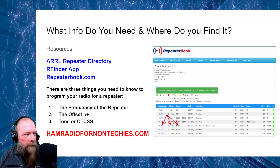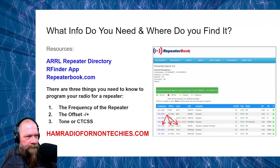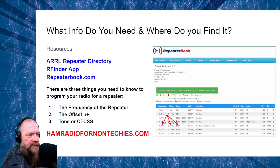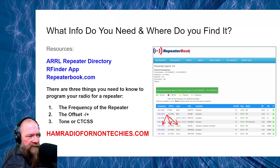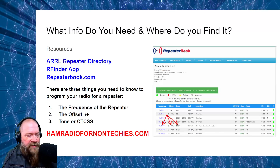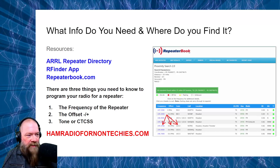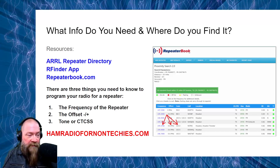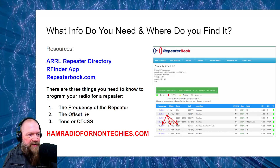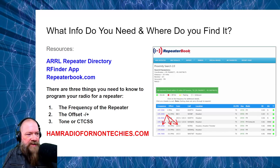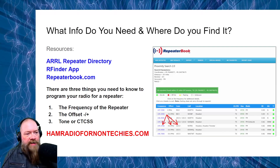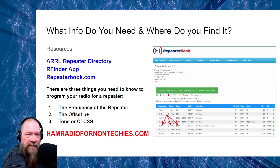There are three things you need to know to program your radio for a repeater. Number one is the frequency of that repeater. Two is the offset. Three is the tone, or CTCSS. If you look at the picture on the right, I have three arrows: the first points to the repeater frequency, the offset in the middle shows negative 0.6 MHz, and the tone is set for 123.0 Hz.